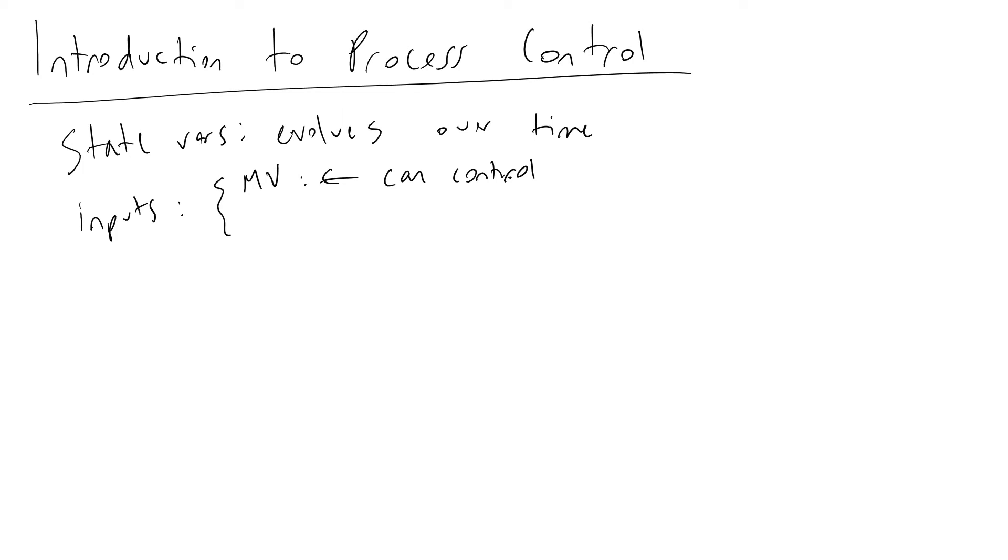We also have inputs referred to as disturbance variables, which are things we can't control. These are external events such as upstream perturbations that we need to take into account in our model.